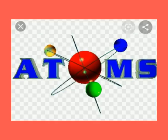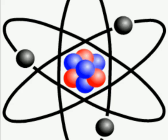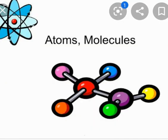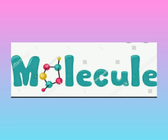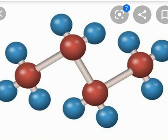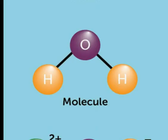The smallest and unique part of an element that exhibits the properties of the element is called an atom. An atom combines with another atom to form a compound, and it is called a molecule.